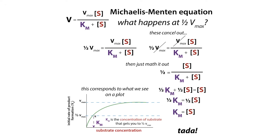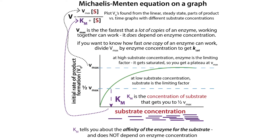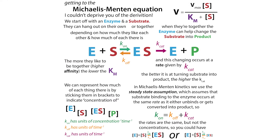The lower the Km, the less substrate it's going to take to get to that point. How much individual enzymes like to bind the substrate is not going to depend on how much substrate is around — so the Km is not going to depend on the substrate concentration. The Kcat also isn't going to depend on the substrate concentration, because how much substrate you have is not going to influence how quickly an enzyme converts that substrate to product. The only thing that depends on substrate concentration is going to be your velocity.